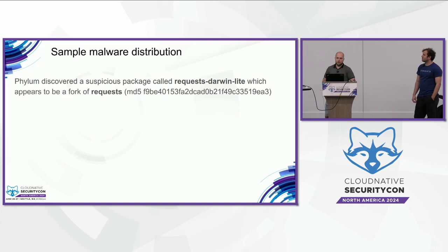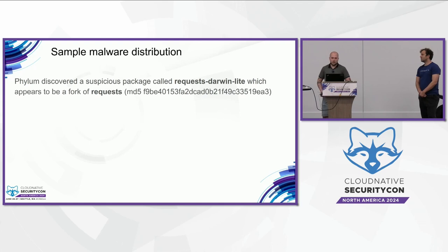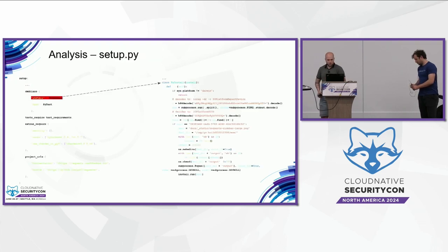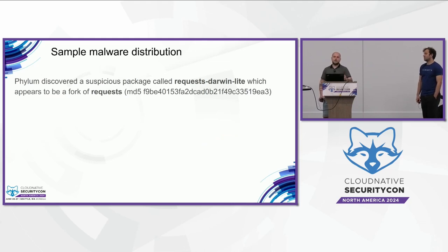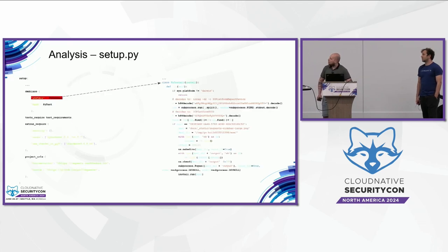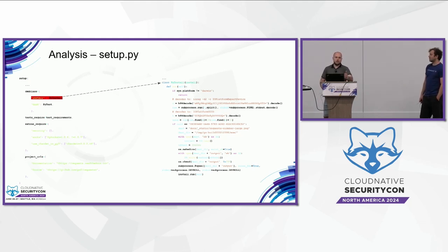I'd like to give one example before we jump into implementation details. This is a recent example I find interesting because it highly resembles a red team operation, though it may not be — I couldn't attribute it to a known threat group. Looking at the package name: it is `requests-darwin-lite`, which appears to be a fork of `requests`. But in the details, there is a `setup.py` with a `pyinstall` function inside. What `setup` means is that when you install the package, this function is going to run.